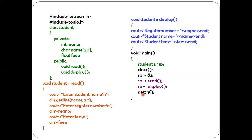Execution returns to void main to call the getch function. The purpose of getch is that once you compile and run the program and input the values for student name, register number, and fees, after pressing enter you will see the output on screen without it returning to the programming screen immediately. This is the complete program using the concept of pointer to object. Thank you for watching this video.